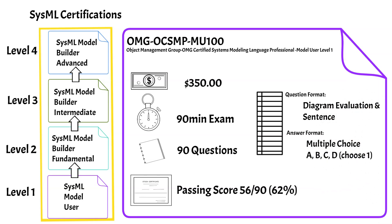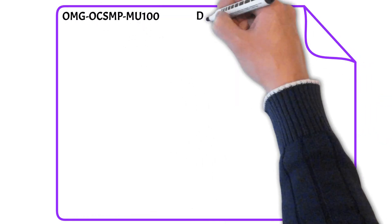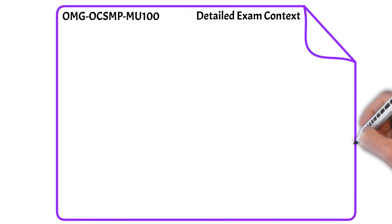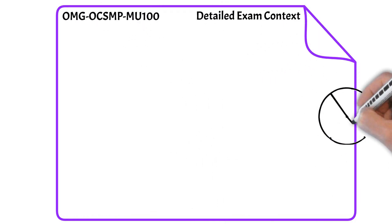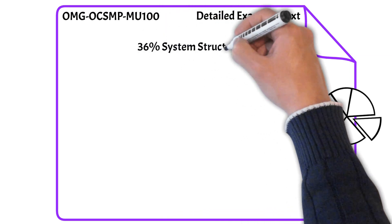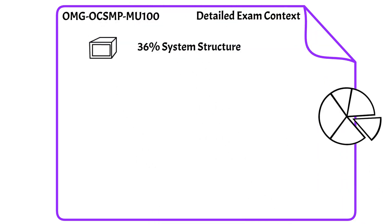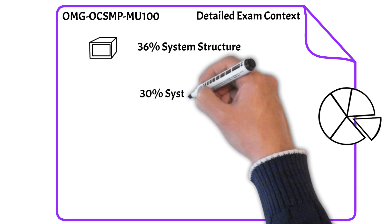You select either A, B, C, or D — you choose one. This exam tests an individual's knowledge and skills required to interpret a basic SysML model of a system, covering system behavior, system structure, and requirements, as well as some cross-cutting constructs.